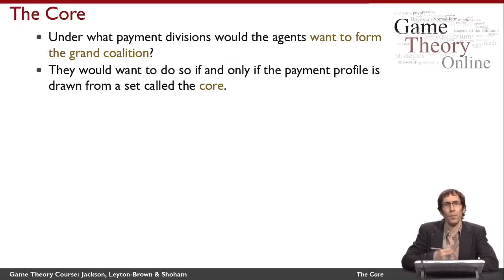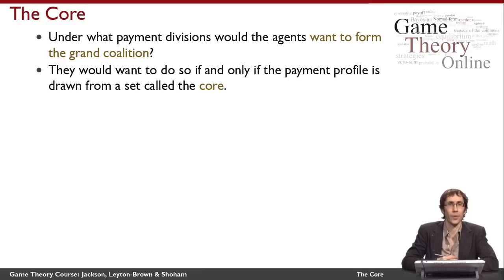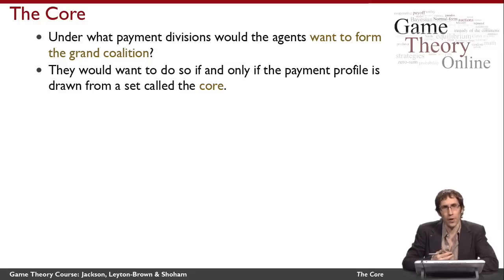The question we're going to think about is: under what payment divisions would the agents be willing to form the grand coalition? The answer, as we'll see, is that they would be willing to do so if the payment profile belongs to a set which we'll call the core.